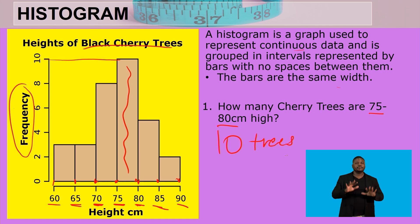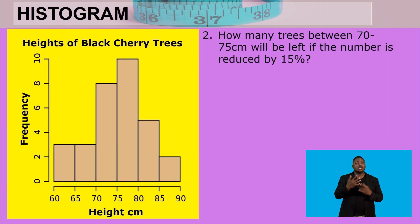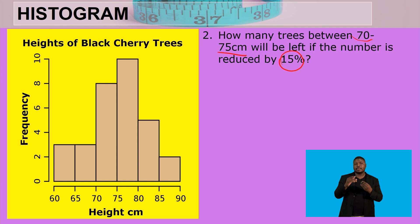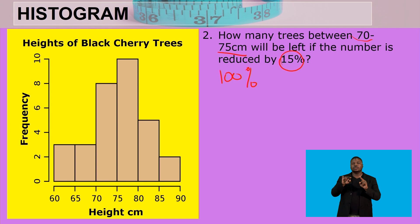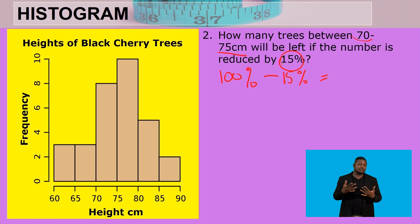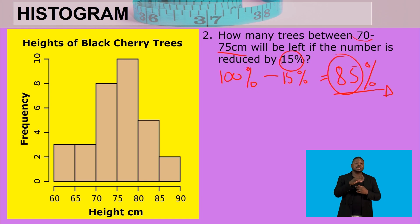Question two asks: how many trees between 70 to 75 centimeters will be left if the number is reduced by 15%? We need to integrate the concept of percentage decrease. The current number of trees represents 100%. If we reduce by 15%, we subtract 15 from 100, giving us 85%. So the remaining number will be 85% of the original.